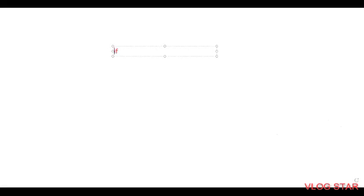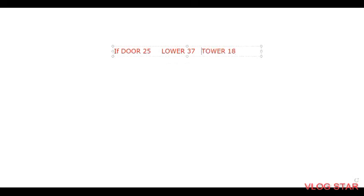New example: the word DOOR is coded as 25, LOWER is coded as 37, and TOWER is coded as 18. These are the three patterns given. Now they are asking how OVER will be written.